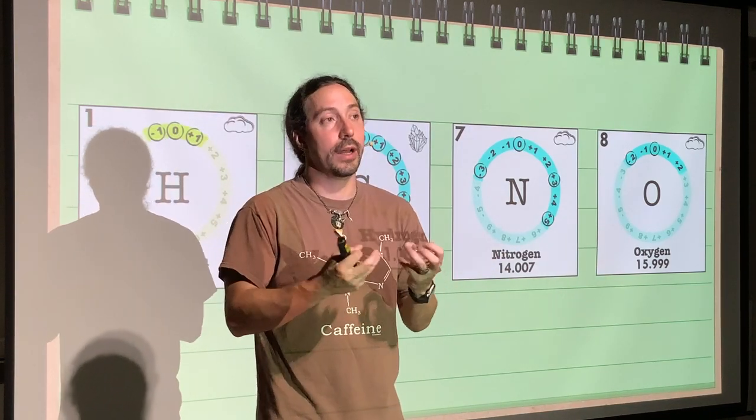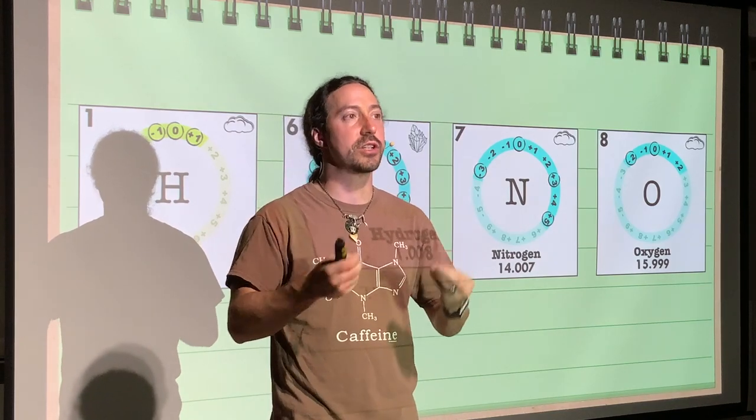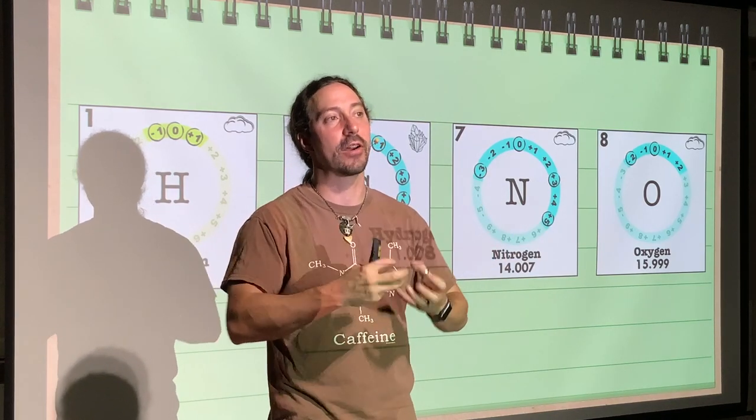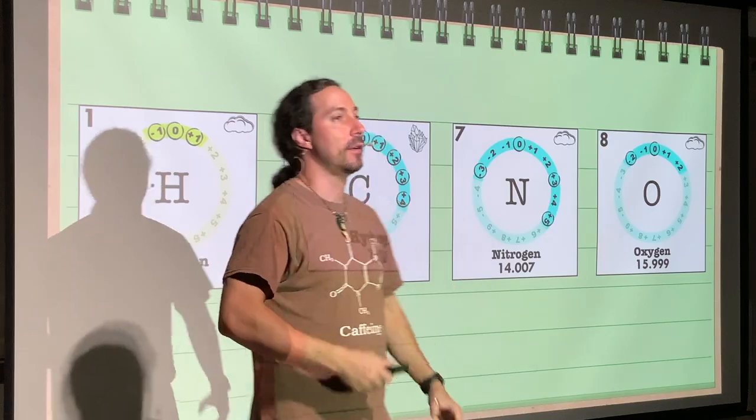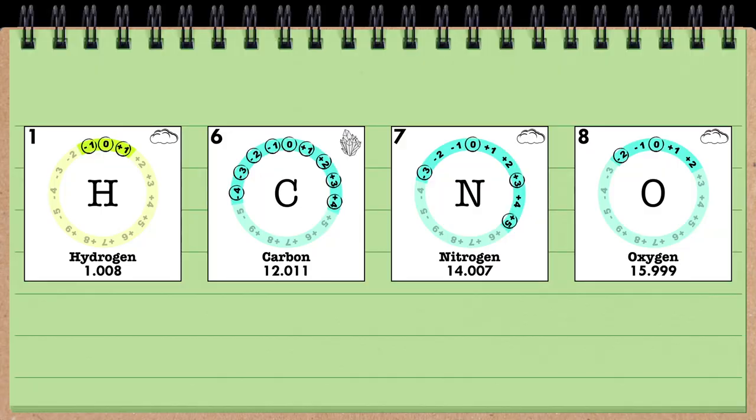So that's going to be our four elements that we are going to focus on. Each one is going to have unique properties, which is going to make it act in a very specific way. The first thing that you needed to understand is how many protons and how many electrons each one of these elements had.